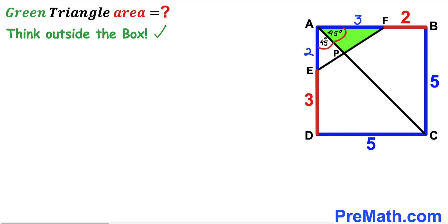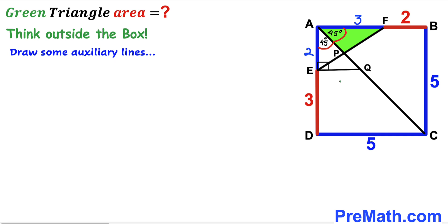Now we are going to think outside the box and draw some auxiliary lines to make our job simpler. As you can see in this next step, I have dropped a perpendicular QE on side AD. Since this angle is 90 degrees and this angle is 90 degrees as well, both lines EQ and AF are parallel to each other.